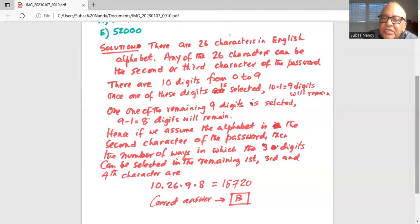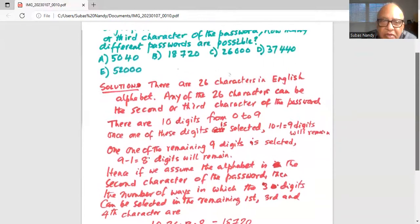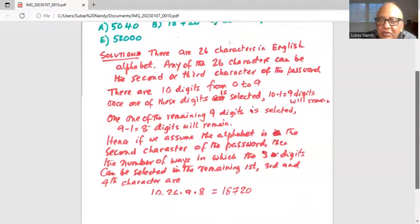So total number of ways in which the password can be constructed, or total number of passwords is 10 multiplied by 26 multiplied by 9 multiplied by 8, which is 18,720 passwords. Okay, correct answer is B, 18,720.